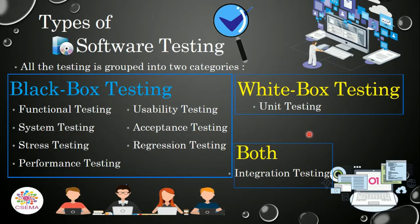Black box testing is the testing in which the tester does not have any information about the internal working of the software system. It is a high-level testing approach that only focuses on the behavior of the system — how it behaves under different kinds of operations. The testing techniques under black box testing include functional testing, usability testing, system testing, acceptance testing, stress testing, regression testing, and performance testing.